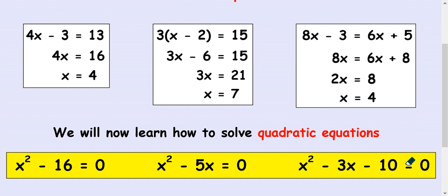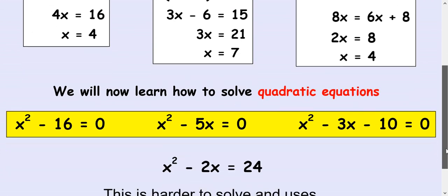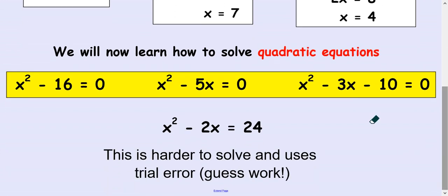This is a really important method to solve quadratic equations. If you look at a quadratic equation that doesn't have the zero on this side, it's much harder to solve. And generally speaking, we have to use trial and error or guesswork.